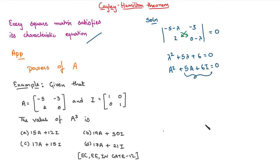Now, transferring this term to right hand side, we get A square is equal to minus 5A plus 6I.